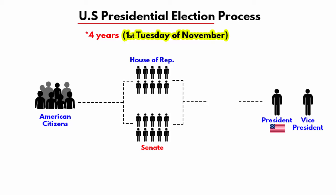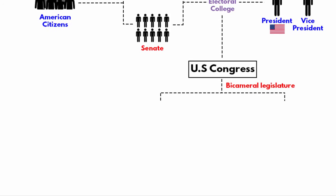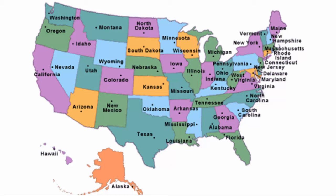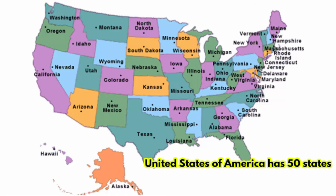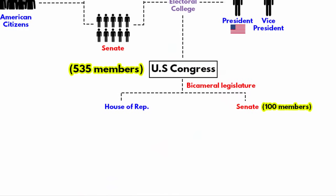So how does the Electoral College work? The US Congress is the bicameral legislature of the federal government of the United States and consists of two chambers: the House of Representatives and the Senate. The entire United States has 50 states, and the states have congressional districts. There are a total of 535 members in Congress — 100 serve in the US Senate and 435 serve in the US House of Representatives.